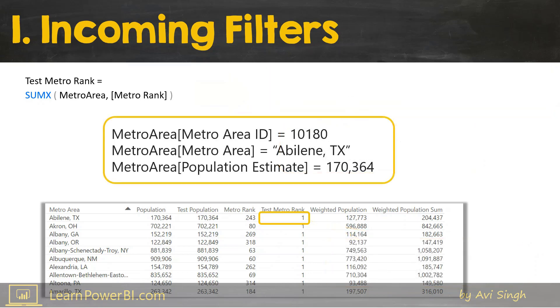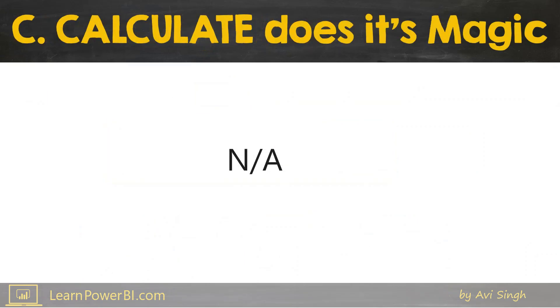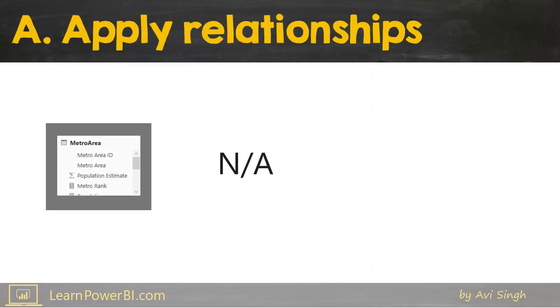Move on to the next step in the four-step ICANN process: C is for CALCULATE — does not apply, there's no CALCULATE in this function. The next step is Applied Relationships — does not apply, it's just a single table. Great.